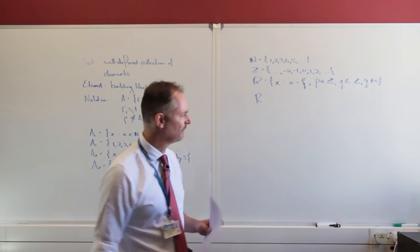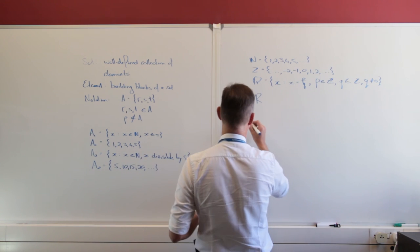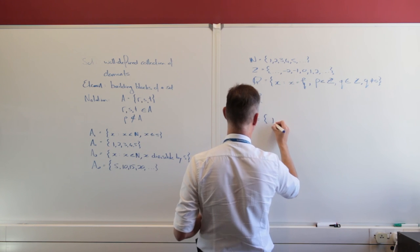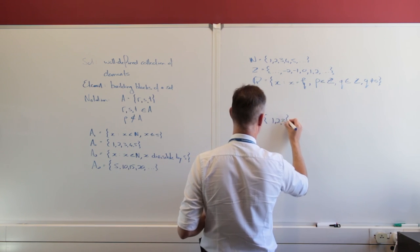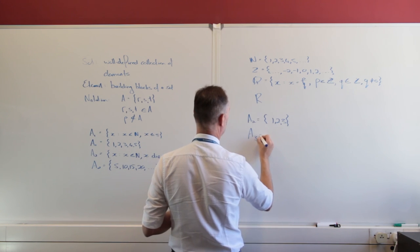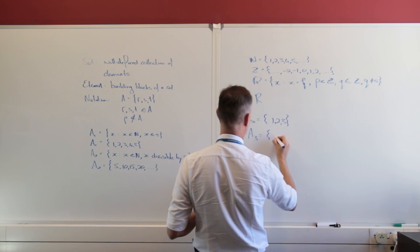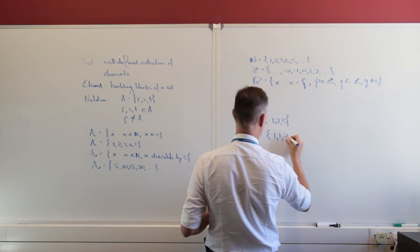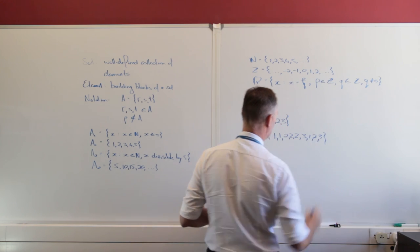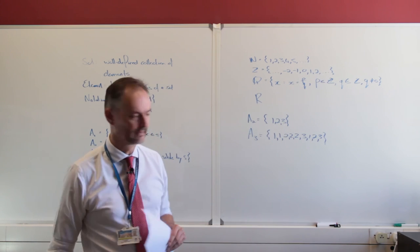Next up, I just want to remind you when two sets are equal. So if I have a set A2 here, and that set equals the elements 1, 2, and 3, and I have A sub 3, my second set there, and that contains the elements 1, 1, 2, 2, 2, 3, 1, 2, 3, those two are exactly the same.